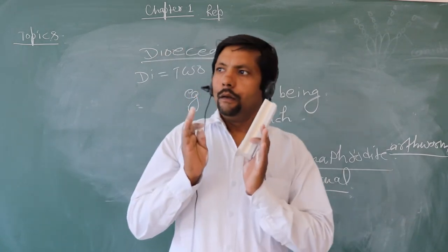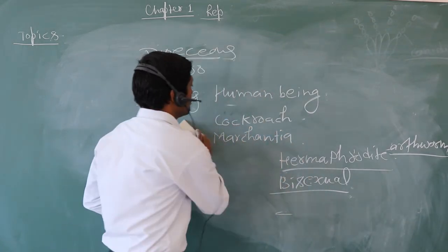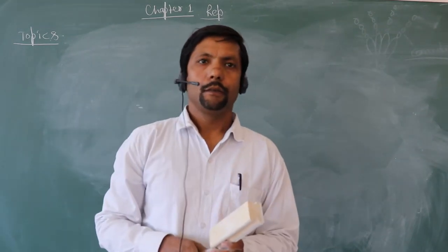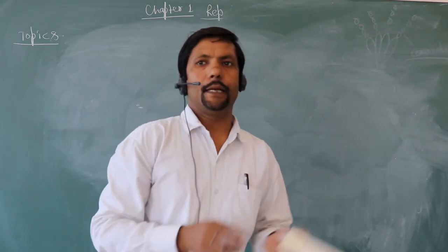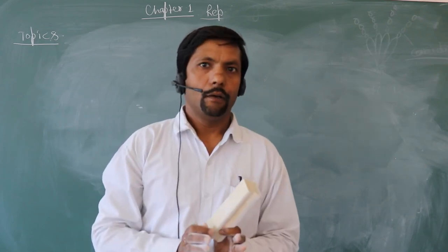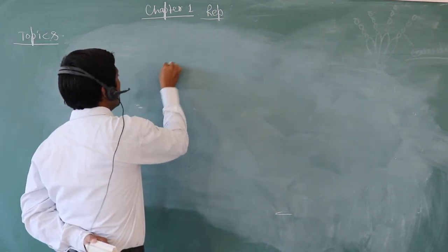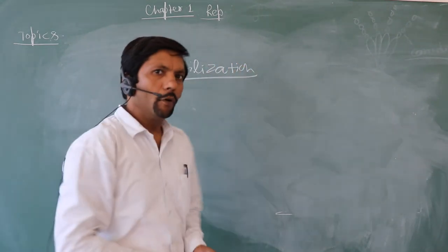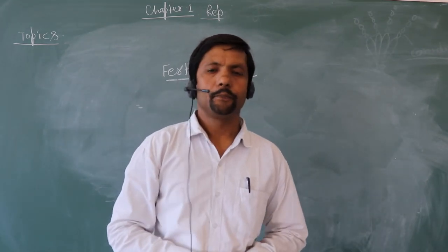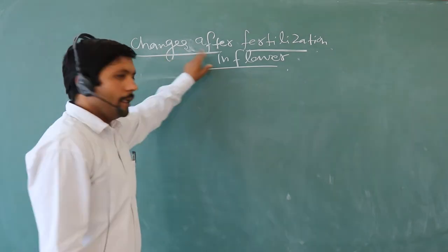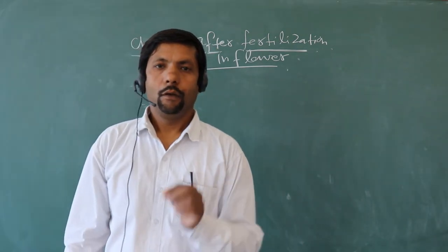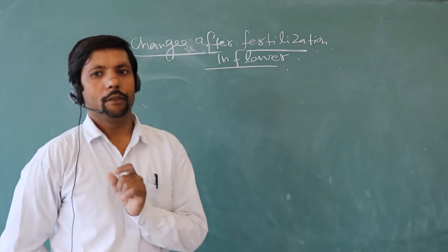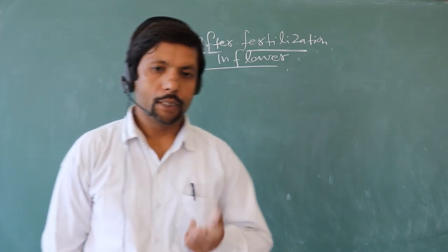This is all about sexuality in organisms. Now come to the events — the changes that take place in any flower after fertilization. Changes after fertilization in a flower: after fertilization, the sepals, petals, and all other parts become dry and shed off.